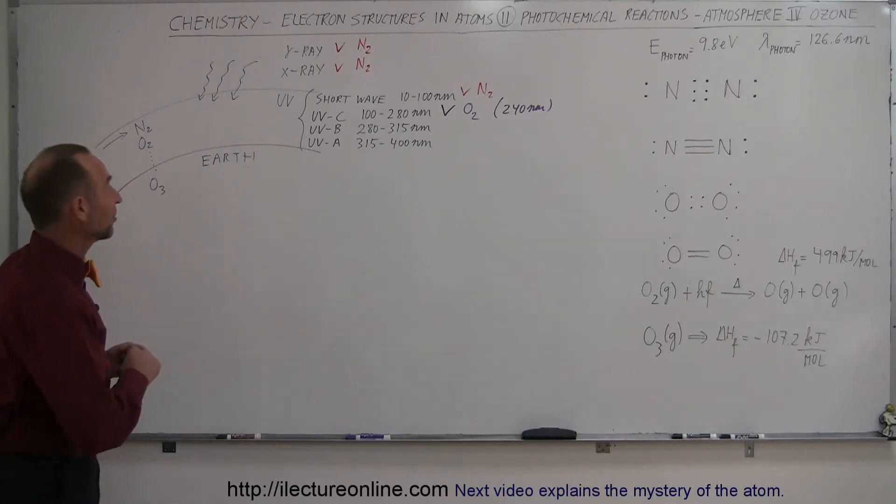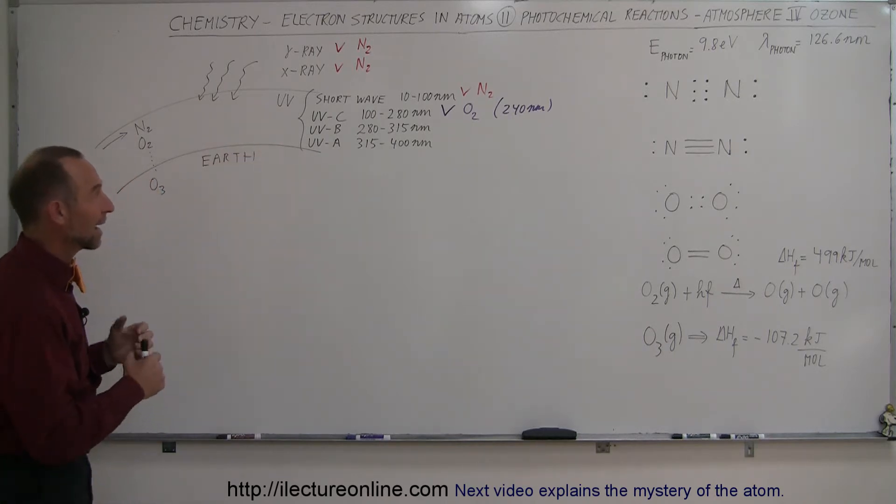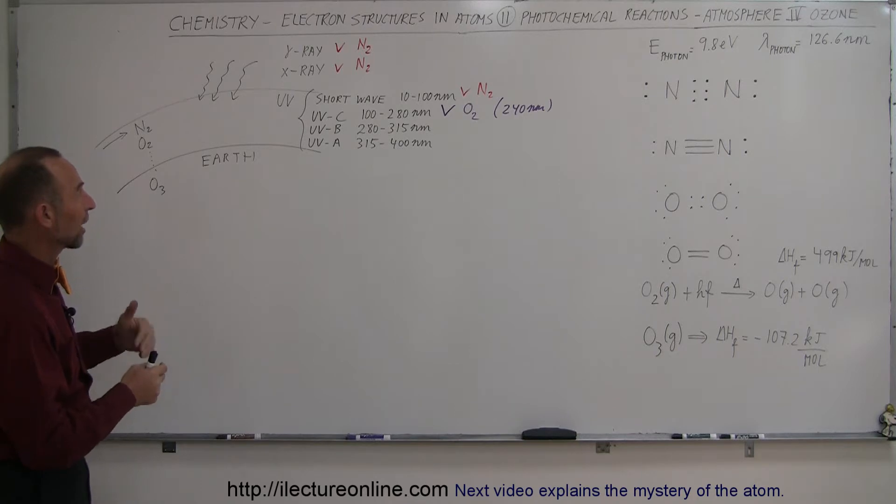Now we're going to look at our last mechanism of defense in the atmosphere. We've already looked at how nitrogen and oxygen protect us from very high, dangerous forms of radiation: X-rays, gamma rays, and shortwave UV radiation.